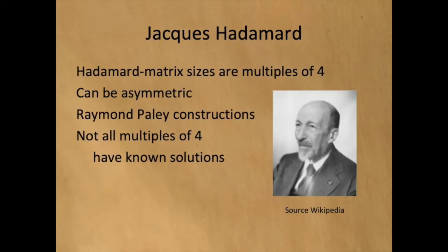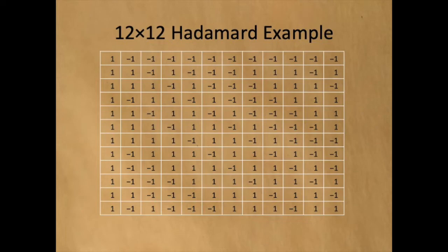Jacques Hadamard developed Hadamard matrices with sizes that are multiples of 4. These matrices can be asymmetric. Here's an example of a 12x12 Hadamard matrix. Note that the top row mostly contains negative ones and the left column contains all positive ones,